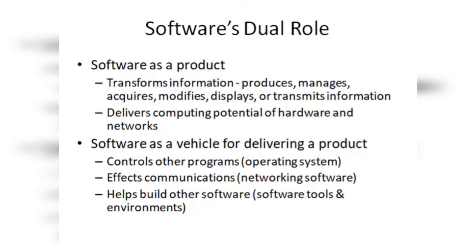But can we directly execute WhatsApp? The answer is no. WhatsApp को हम तक पहुंचाता कौन है — operating system. Operating system भी एक software है जिसमें lines of code लिखे हैं, वो भी actions perform करता है, but operating system एक vehicle की तरह act करता है — वो अलग-अलग products को आप तक पहुंचाता है। So software works both as a product and as a vehicle.